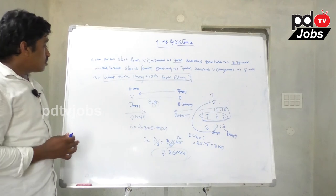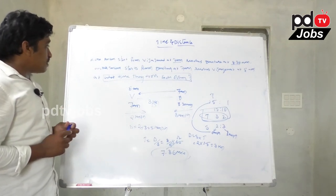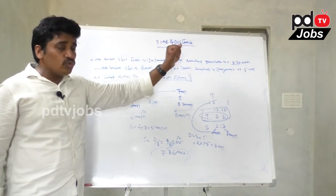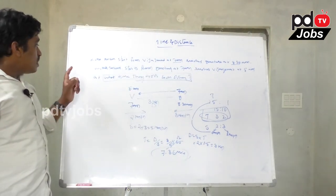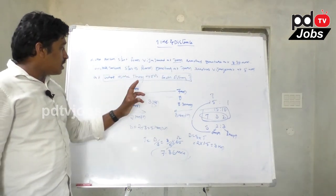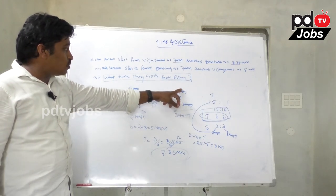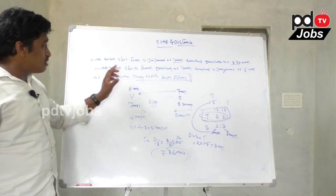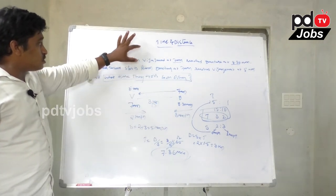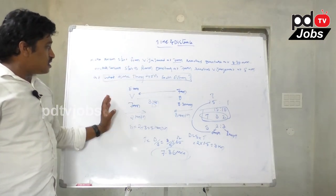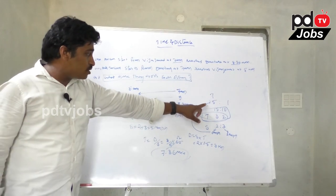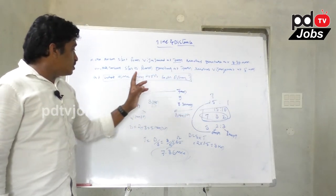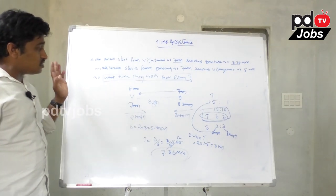To recap: person 1 starts from Vijayawada at 7 AM and reaches Guntur at 8:30 AM. Another person starts from Guntur at 7 AM and reaches Vijayawada at 8 AM. They cross each other at 7:36 AM.